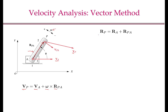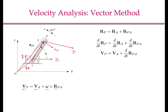We start with the position of point P. The position vector RP equals RA, the position vector of point A, plus RPA, the position vector of point P with respect to A. Taking the time derivative, d/dt of RP equals d/dt of RA plus d/dt of RPA. By definition, d/dt of RP is the velocity of P, and d/dt of RA is the velocity of A. We will show that d/dt of RPA is in fact omega cross RPA.